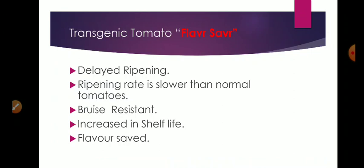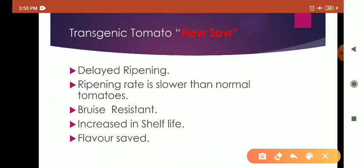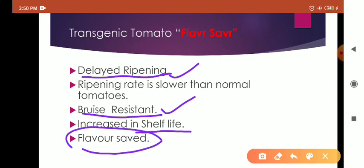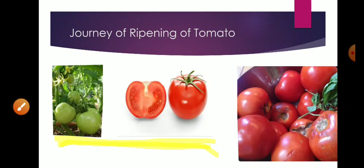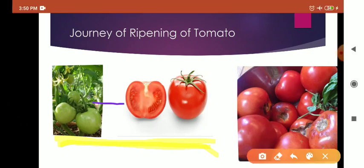Being a transgenic plant, it has some superior qualities over the normal tomato plant. These are delayed ripening, bruise resistant, and due to these two qualities the shelf life of the tomatoes has been increased. The most important feature is even after all these changes, the flavor of the tomato has been saved, that's why the name Flavr Savr. We know that a tomato very easily goes from early state to a very mature state. It ripens and normally it perishes. If this process is delayed somewhat, then we can achieve very good transportation for these tomatoes and also marketing and business will be successful.